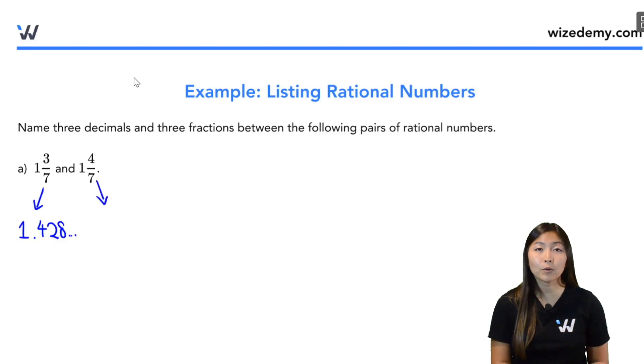Do the exact same thing for one and four over seven. So you get one point and then four divided by seven. You should get 1.571 and something, something, something. All right. Now we just have to find three decimals that are in between these two rational numbers. So something that is bigger than 1.428, smaller than 1.571.